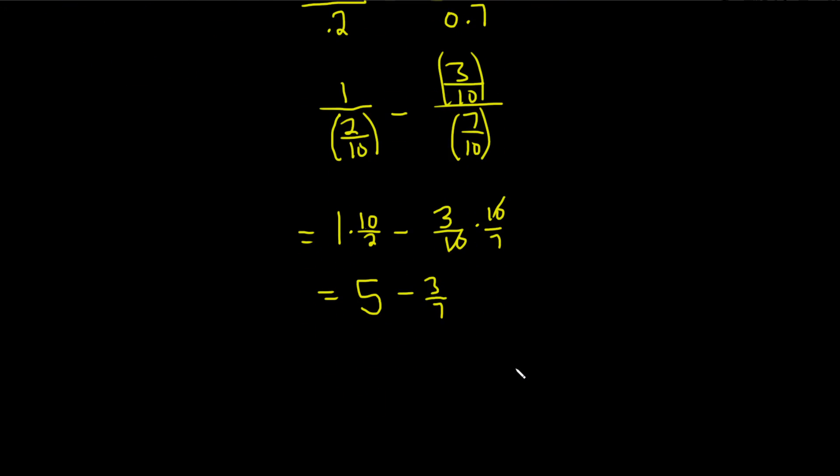And if we really want to continue our process of doing things by hand, we now have to subtract. So we want to write 5 as a number over 7. To do that, we can multiply by 1 in a very clever way. We can multiply by 7 over 7. We get 7 times 5, which is 35 over, and there's really a 1 here, 7 times 1 is 7. Minus 3 over 7.